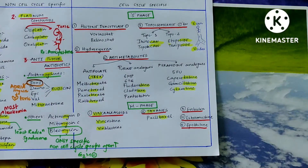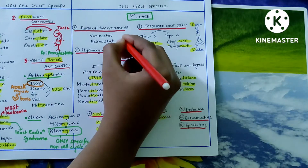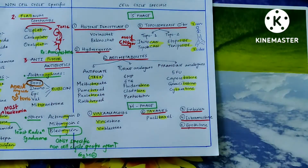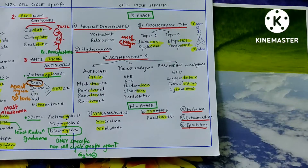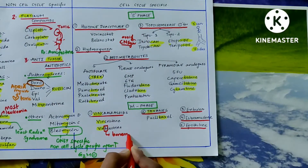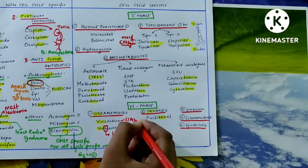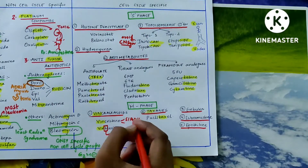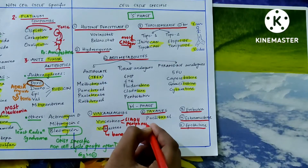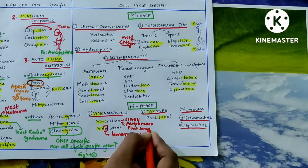Vinblastine has 'b' in it, so it causes bone marrow toxicity. Irinotecan is to be avoided in Crigler-Najjar syndrome, because the enzyme that metabolizes this drug is deficient in those patients.